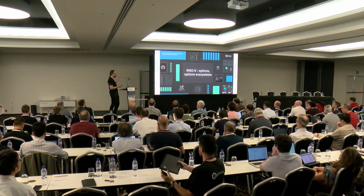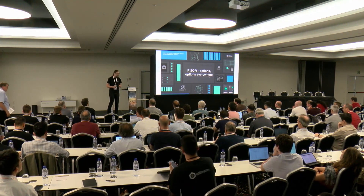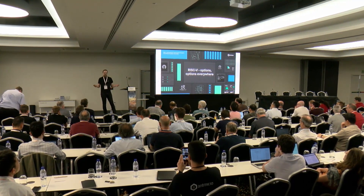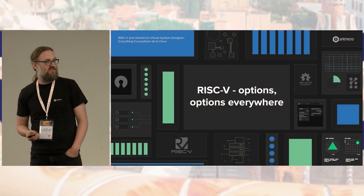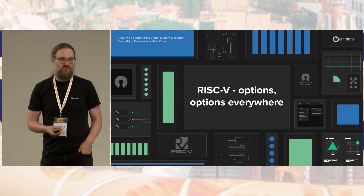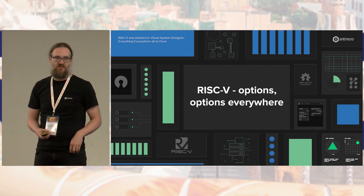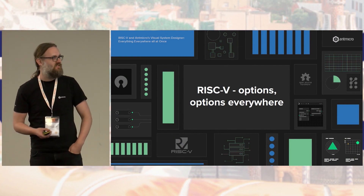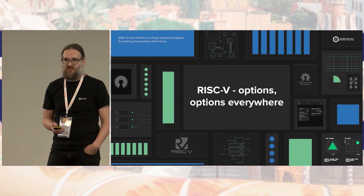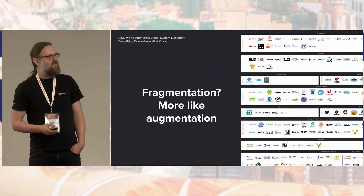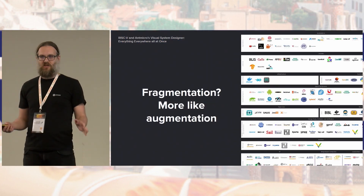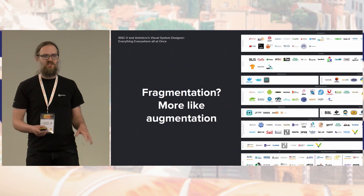When we talk about RISC-V, RISC-V is all about options. Even the ISA itself is full of options. And of course, as we go to implementation, software, stacks — it's just lots and lots of stuff that you have to choose from. Some people will say, oh my God, so much choice — it's fragmentation.